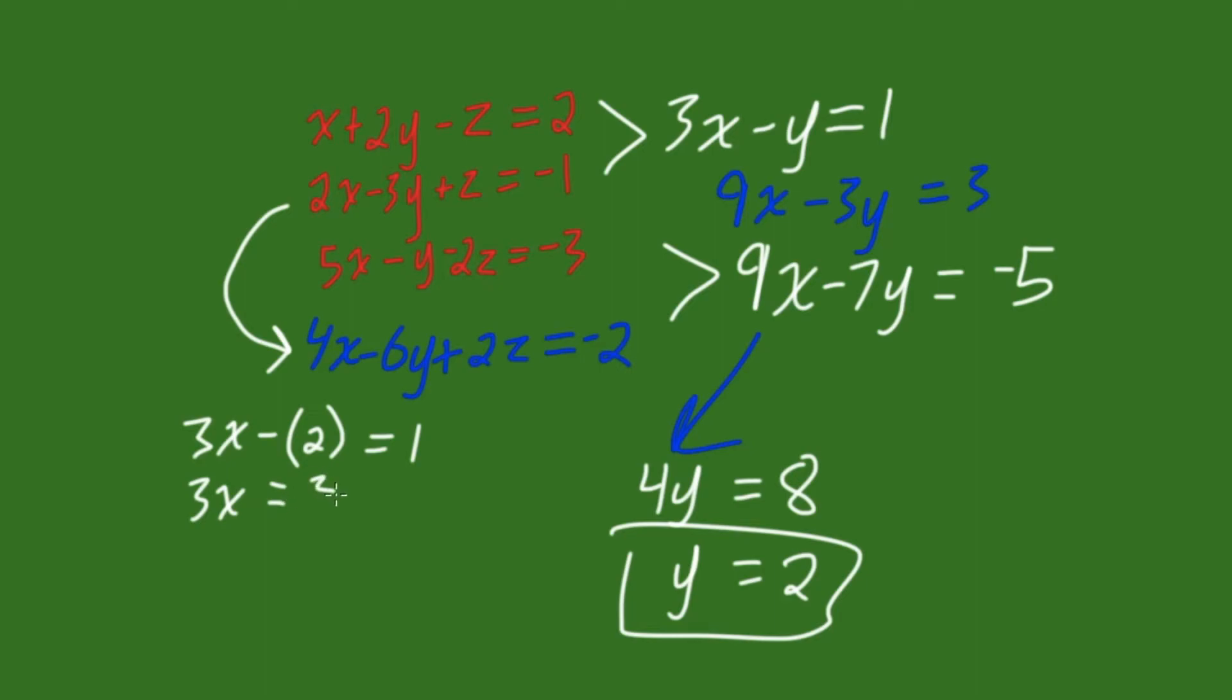So, we have 3x minus 2 equals 1. So, if we add 2 to both sides, we get 3x equals 3. And, if we divide 3 by both sides, we get x equals 1. So, now we have found x and we have found y. And, all we have left to find is z.